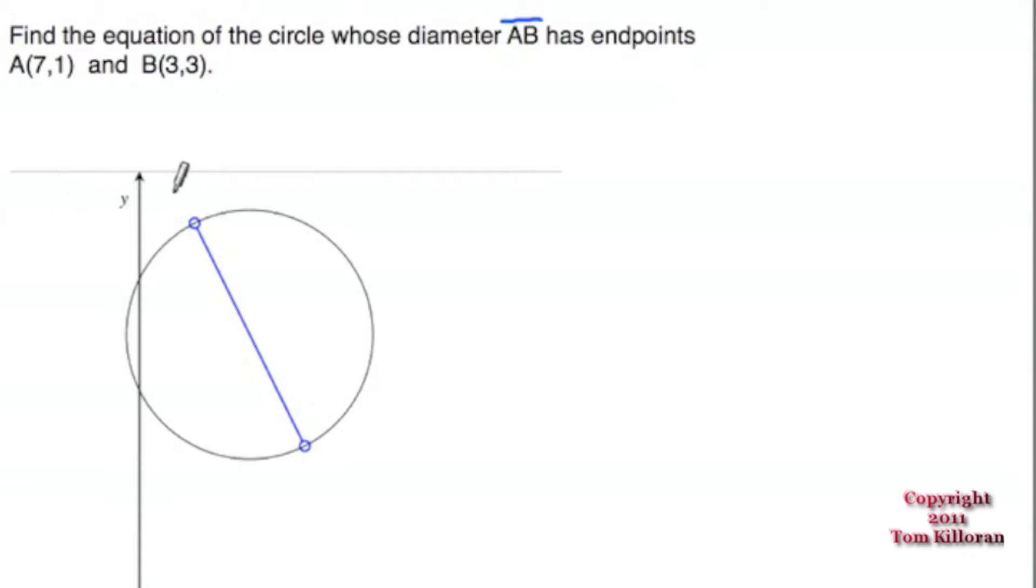So in this picture here, I'm going to designate this one as (7,1). That seems more reasonable. And then this one down here is (3,3).